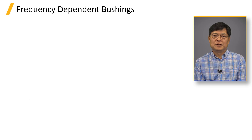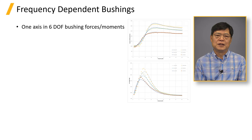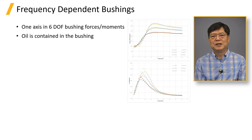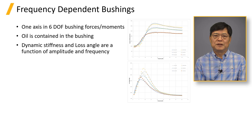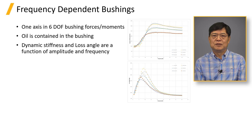The hydro bushing has a higher loss angle than elastomeric bushings. This applies to one direction out of 6 degrees of freedom for bushing forces and moments. Bushing suppliers design the oil chamber and oil flow channel to meet the damping requirements at a given frequency — for example, the 4F suspension shake frequency. Dynamic stiffness and loss angle from tests are a function of both amplitude and frequency. The top plot shows dynamic stiffness from 0 to 40 Hz at 0.5 mm, 1 mm, and 2 mm amplitude. The bottom plot shows the loss angle for the same three cases.